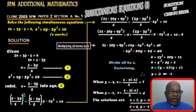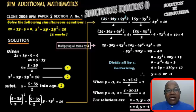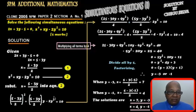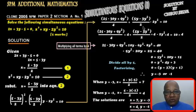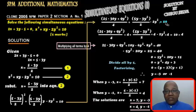Now we simplify and expand. 5 minus 3y squared becomes 25 minus 30y plus 9y squared, over 2 squared which is 4. Plus: y times 5 is 5y, y times 3y is 3y squared, giving 5y minus 3y squared over 2. Minus 2y squared equals to 10.